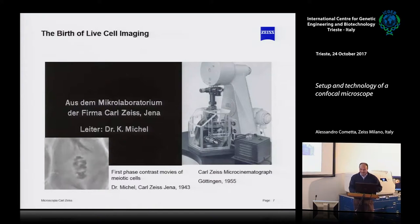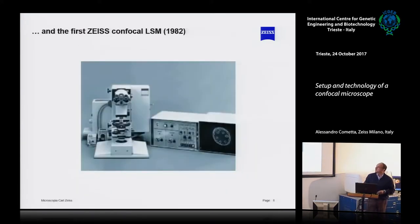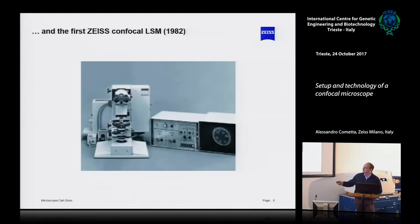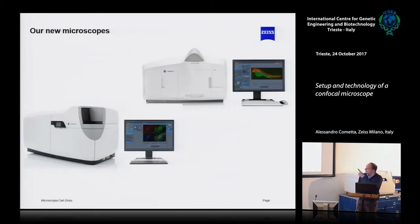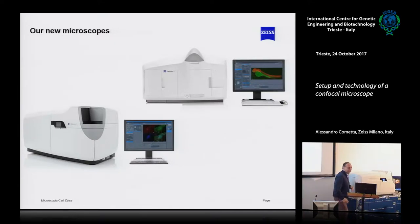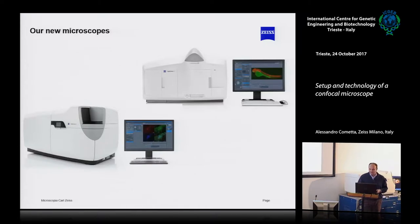Then we reduced the size of the camera a little bit. This is the first microscope sold in Italy, and it looks a little more like our microscope. These are the last two microscopes produced by Zeiss, and they are again much more different than before.